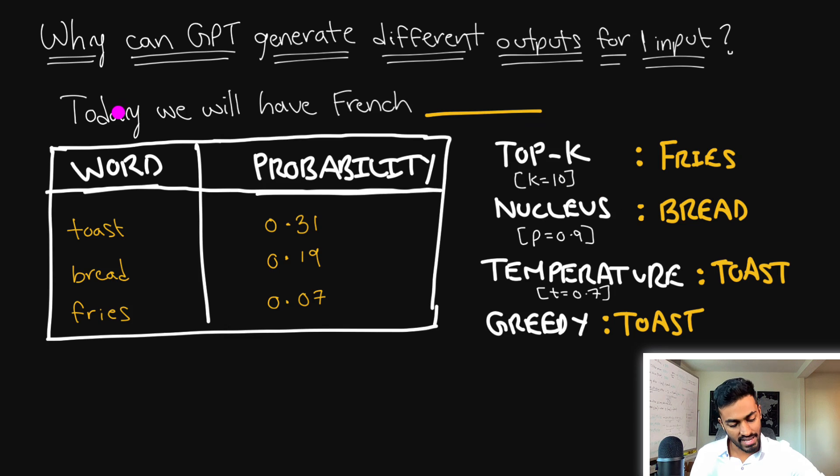Let's take an example: 'today we will have French blank', and GPT is supposed to determine what goes here. GPT is already trained, so it has this knowledge of word sequences and probabilities. GPT determines at this stage the probability distribution of words that can go into this spot - there's a 31% probability this word should be toast, then 19% bread, 7% fries, and it's in descending order, this distribution. With greedy sampling, which is the traditional case of just pick the highest probable word, it's going to predict toast all the time and every single time.